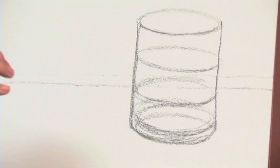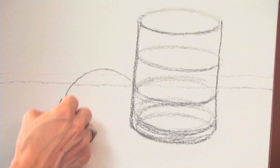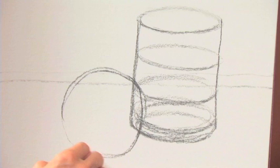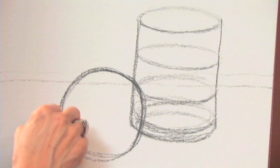And you see it has a three-dimensional quality to it, and we're going to add to that three-dimensional quality with the paint. Now we're going to draw our sphere. And a sphere is really a circle that we're then going to create form with.